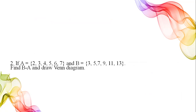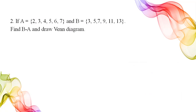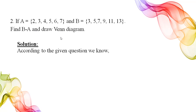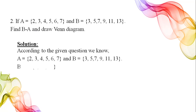Now we take another example. Set A has elements 2, 3, 4, 5, 6, 7 and set B has elements 3, 5, 7, 9, 11, and 13. Our requirement is to find B difference A and draw the Venn diagram. We write set A and then set B, then find B minus A.